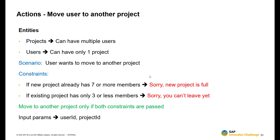Let's take a simple use case scenario. We have two entities: we have the projects and the users. The projects can have multiple users, and the users can have only one project. So let's take a scenario where the user wants to move from one project to another project, but there are a few constraints that need to be met before this user can move.